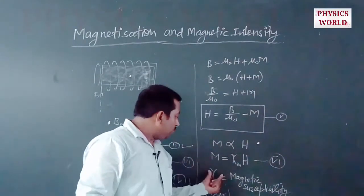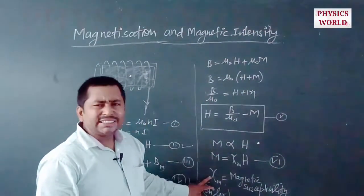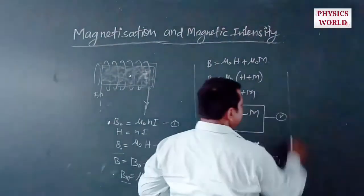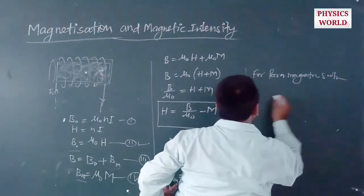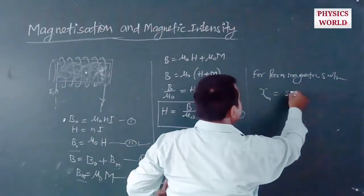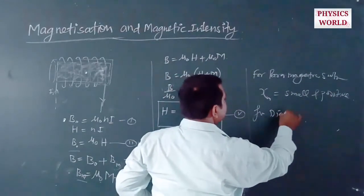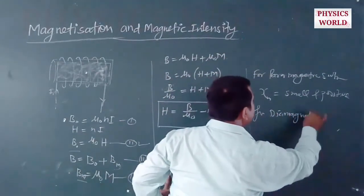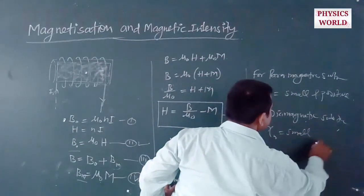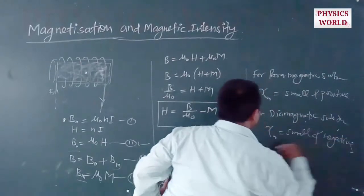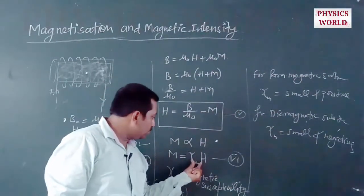The value of χm is measured for different substances. It is found to be small and positive for paramagnetic substances, and small but negative for diamagnetic substances. From this relation M = χm·H, we can find the value of M for any magnetic substance.